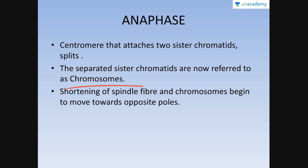Once the centromere has split, there is no longer a centromere present and we now have two individual chromosomes. Shortening of the spindle fibers occurs — the spindle fibers start to move towards the two opposite poles, and since the chromosomes are attached to the spindle fibers, as the spindle fibers shorten the chromosomes begin moving towards the opposite poles.